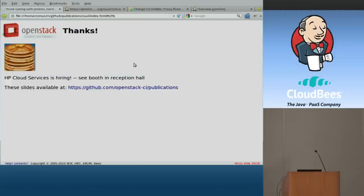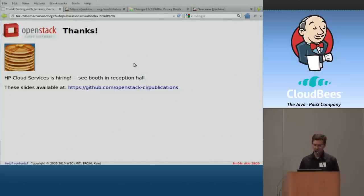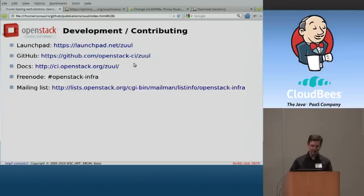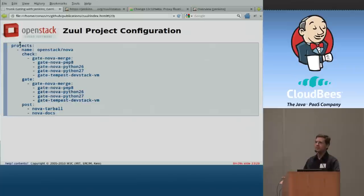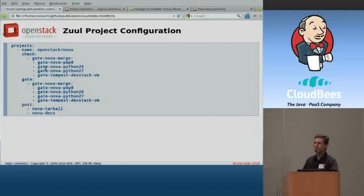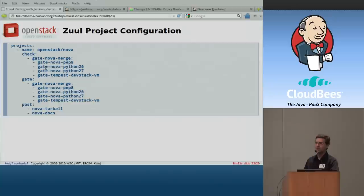The question is: where is the project configuration for each of the projects that Zuul watches stored? So there's the Zuul layout file in YAML, which basically says for this project, run these jobs. That's one large, hopefully fairly readable YAML file for Zuul. The jobs themselves we configure with a project called the Jenkins Job Builder, which is a Python script that reads YAML, outputs Jenkins XML, and automatically configures the jobs. There's a lot of great new work in Jenkins going on in that area with automatic configuration of jobs — a lot of that didn't exist when we started this.